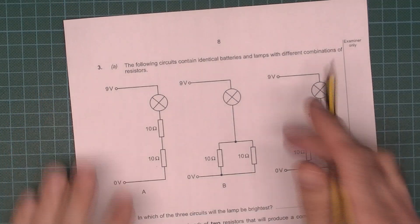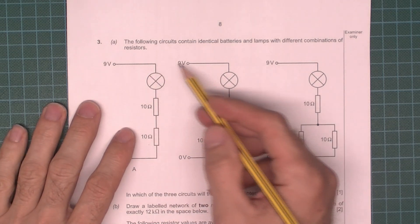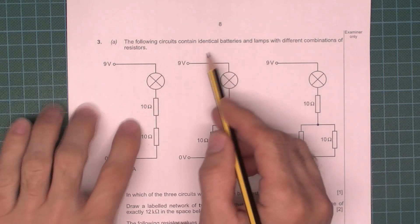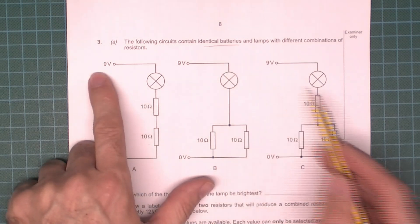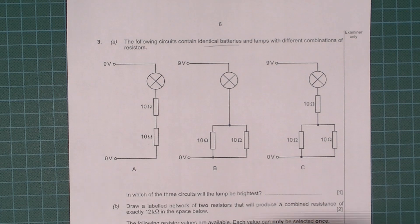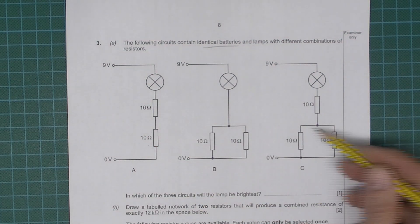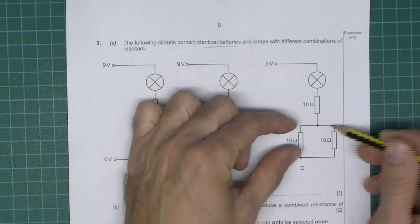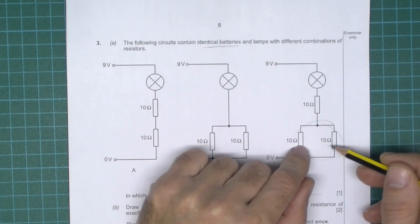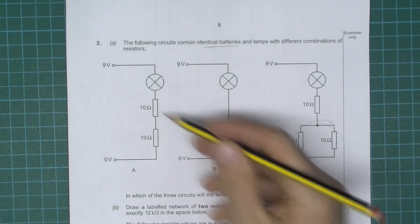Question three. In the mock exam you're going to have something similar but different. We've got three circuits here with identical batteries — nine volts, nine volts, nine volts — and identical lamps, but different combinations of resistors: some in series, some in parallel. We need to work out in which of the three circuits the lamp will be brightest, so let's work out which has the least resistance.